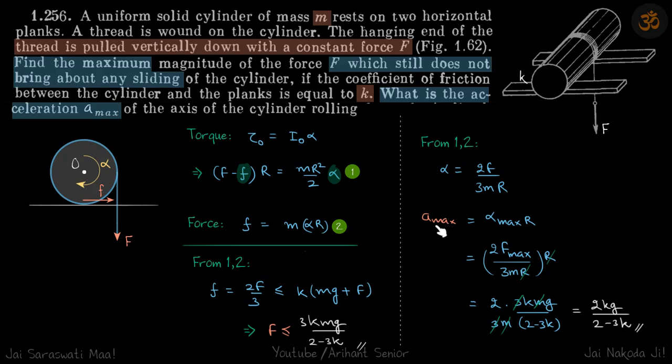So what will be a_max? In case of rolling, a = αR, so that will be α_max × R. And α_max will be when F is maximum, so we'll put the value of F_max here, simplify it, and get our answer.